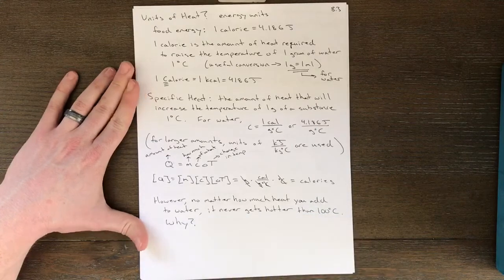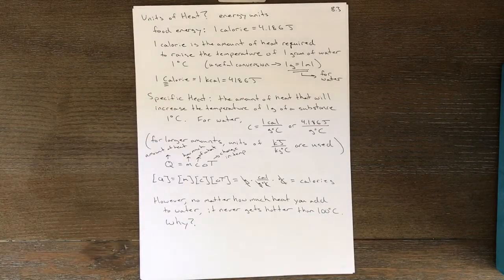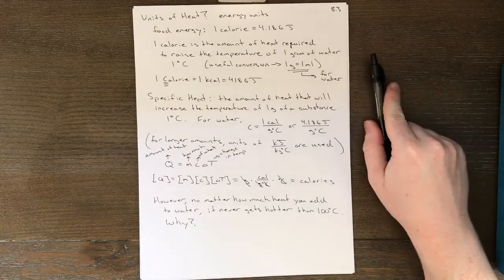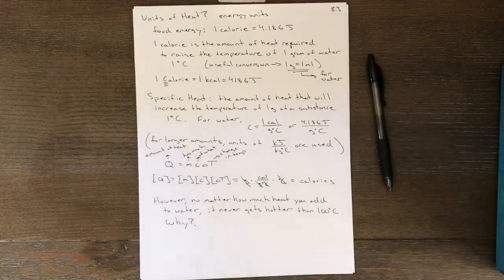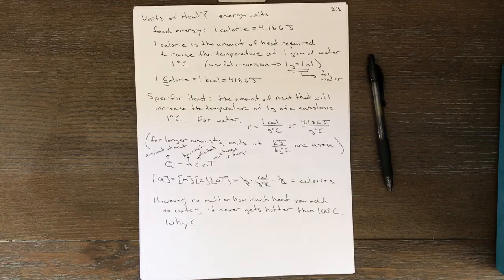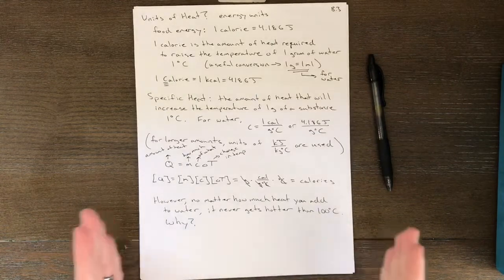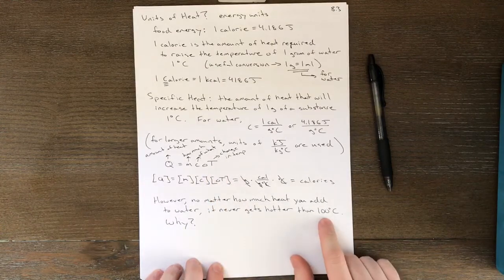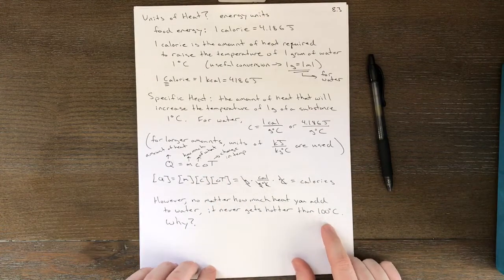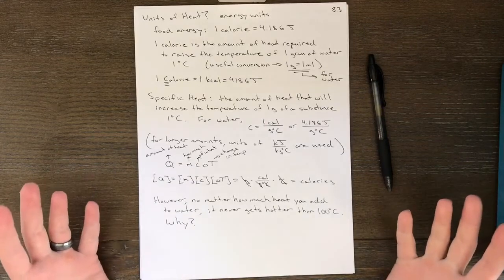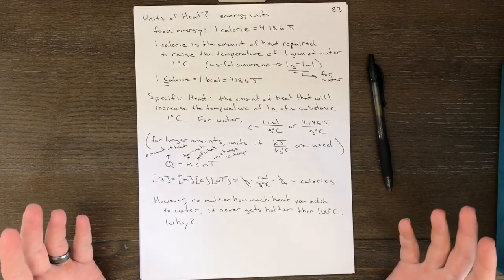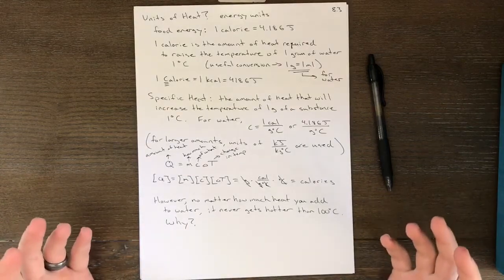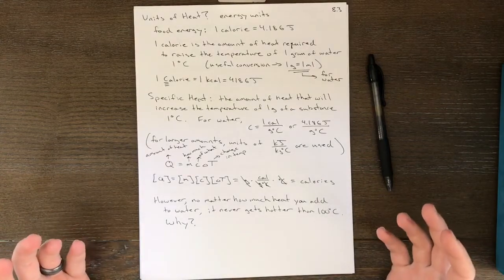But I'll leave you guys with a question at the end of this video. No matter how much heat you add to water, it can never get hotter than 100 degrees Celsius. You keep adding heat, its temperature keeps going up and up and up, but it hits a wall at 100 degrees Celsius. And I'll leave you with the question of why. So think about that for a minute before we get to our next video. Why can't you get water hotter than 100 degrees Celsius?